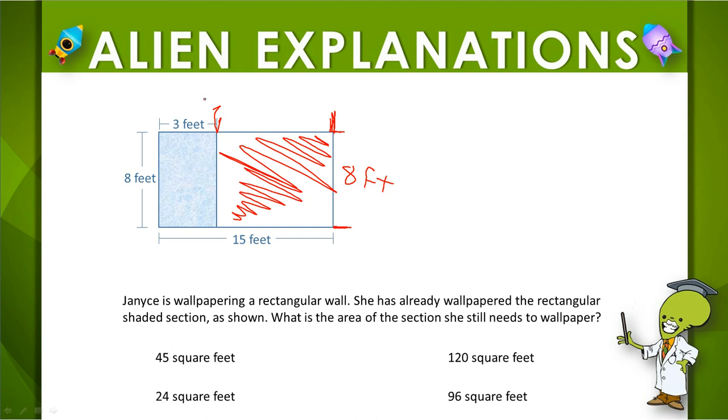Well, we know two things. We know this total distance across is 15, and then we know this little piece over here is 3. So the total is 15, part of it is 3. So what does the leftover part have to be? This has to be 12.